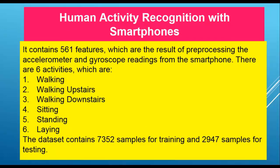Our dataset contains 561 features which are the result of processing the accelerometer and gyroscope readings from the smartphone. There are 6 activities — walking, walking upstairs, walking downstairs, sitting, standing, and laying. The dataset contains 7,352 samples for training and 2,947 samples for testing.